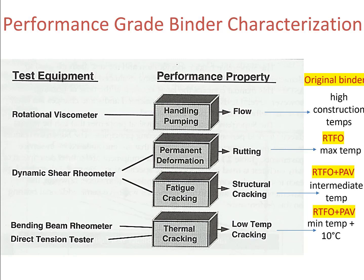Finally, there are two tests to check the sample's ability to resist thermal cracking: the bending beam rheometer test and the direct tension test. The results of these two tests are combined together to check the binder's resistance to low-temperature cracking. Because low-temperature cracking happens at low temperature, these two tests are performed at the minimum temperature plus 10 degrees Celsius, in order to reduce the testing time. Also, since thermal cracking often happens later in the pavement life, the sample needs to go through both short-term and long-term aging prior to testing.